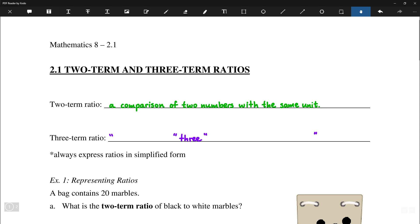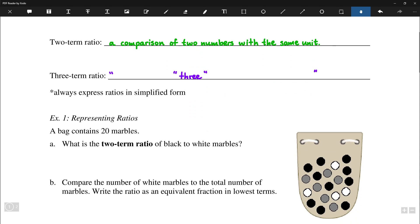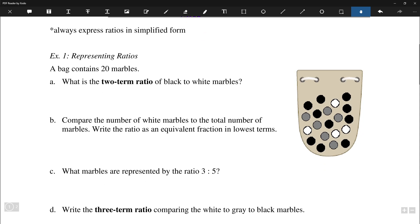So let's look at some examples. In example one, we have a bag with 20 marbles in it. So, the two-term ratio of black marbles to white marbles, we simply have 10 to 4. The totals here are, there are 10 black marbles, and there are 4 white marbles, and there are 6 gray marbles.